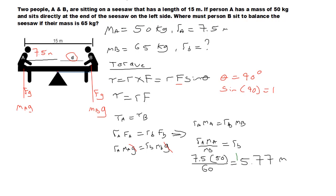So, this means that person A sits 7.5 meters. Then person B sits 5.77 meters, so closer to the center. So, person B weighs more, so in order for it to be balanced, person B has to sit closer to the center.